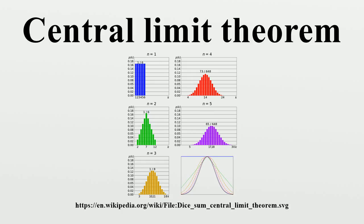To illustrate what this means, suppose that a sample is obtained containing a large number of observations, each observation being randomly generated in a way that does not depend on the values of the other observations, and that the arithmetic average of the observed values is computed. If this procedure is performed many times, the central limit theorem says that the computed values of the average will be distributed according to the normal distribution. A simple example is that if one flips a coin many times, the probability of getting a given number of heads should follow a normal curve, with mean equal to half the total number of flips.